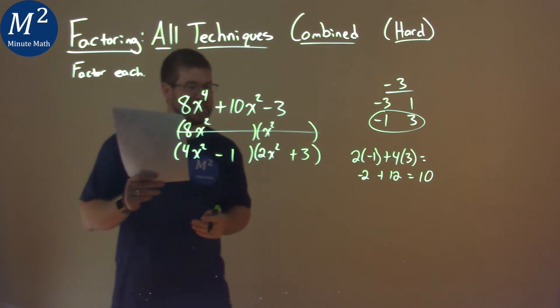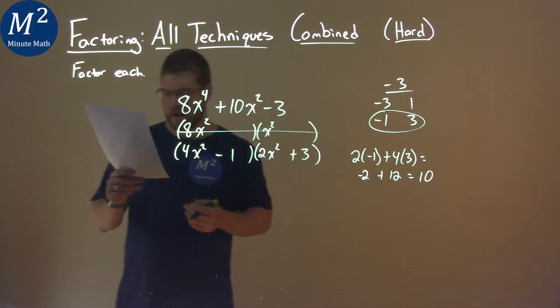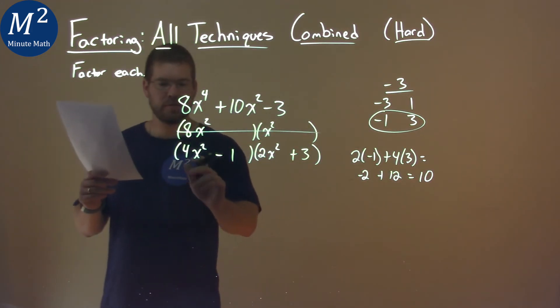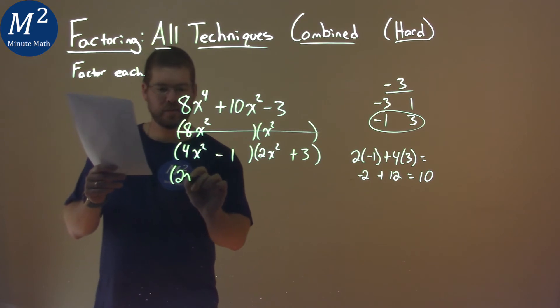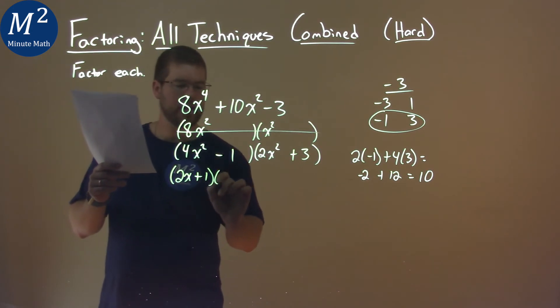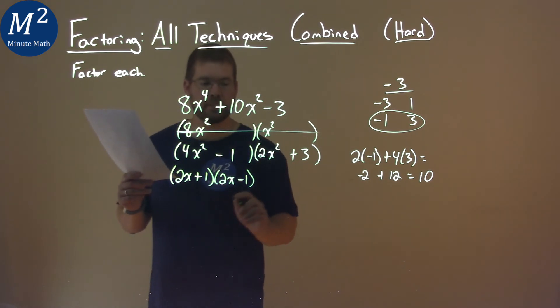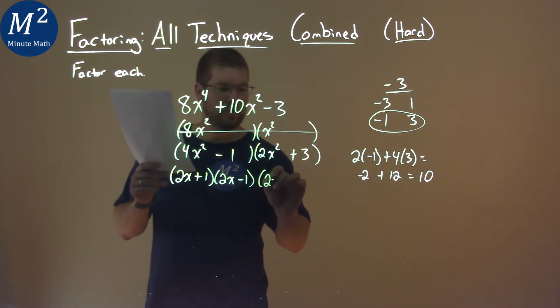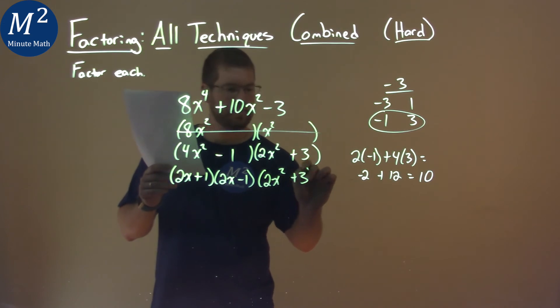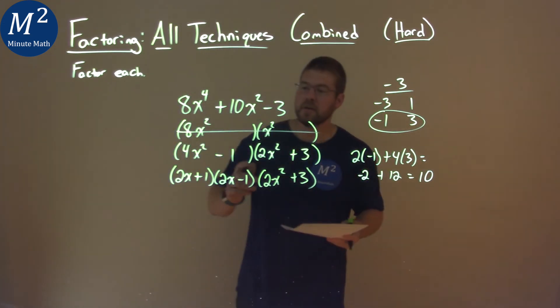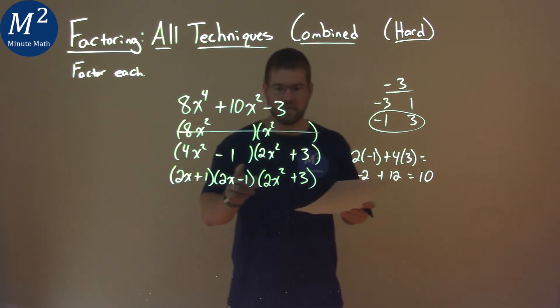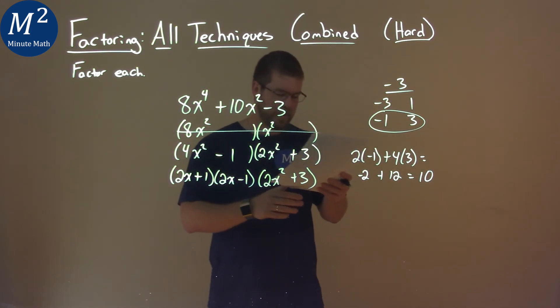We're actually not done. This can still factor more. This first part factors to be 2x plus 1 times 2x minus 1. Negative 1 times positive 1 is negative 1. Add them together, we get 0, that b value there. 2x times 2x is 4x squared. Bring down the 2x squared plus 3. Our final answer is 2x plus 1 times 2x minus 1 times 2x squared plus 3.